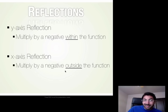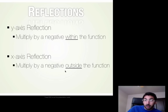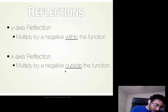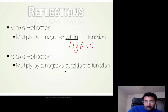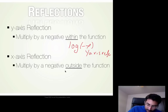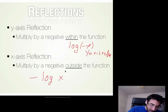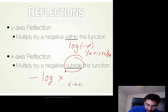One last thing is reflections. If we want to multiply by a negative within the function, that's going to flip our graph over the y-axis. And if we multiply it on the outside, it's going to flip it over the x-axis. For example, if I have log(−x), that means it's going to be flipped over the y-axis — a y-axis reflection. If I have something like −log(x), that negative is happening on the outside of the function, so that means it's going to be an x-axis reflection.